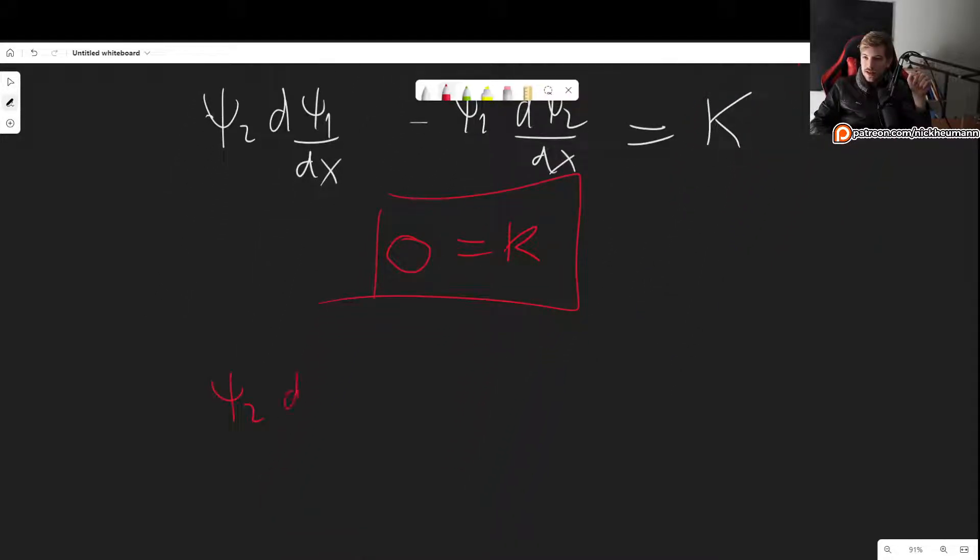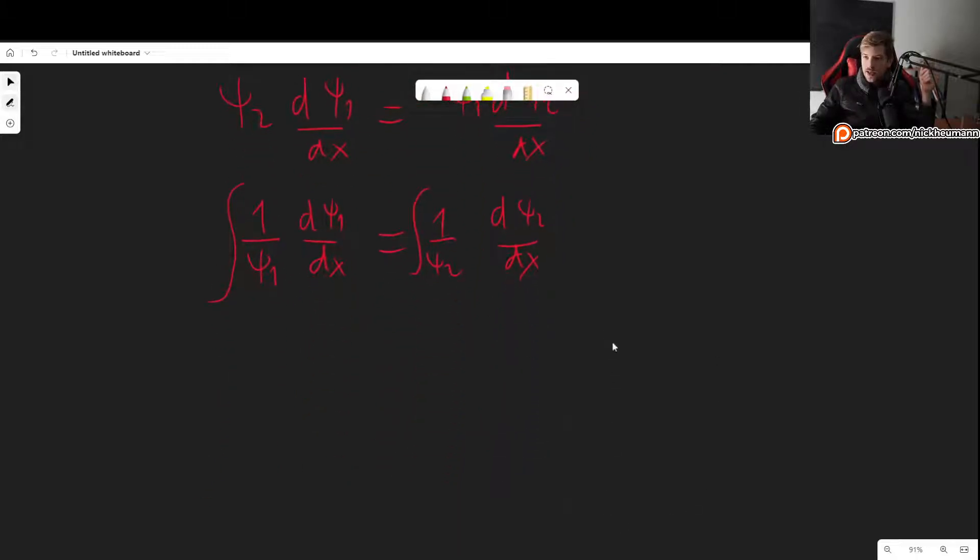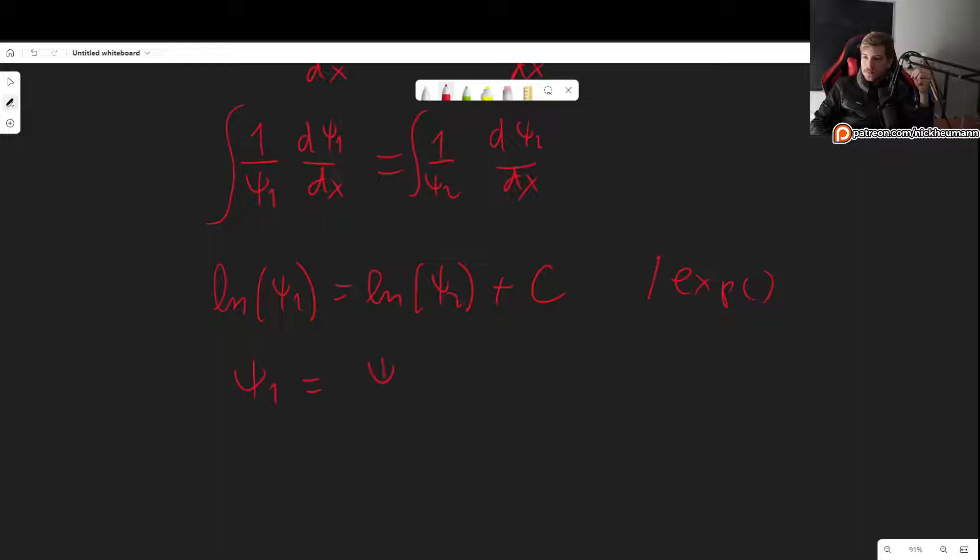So that lets us see that ψ₂ dψ₁/dx is equal to ψ₁ dψ₂/dx. And this is a differential equation that we can easily solve by separating the variables. So everything with ψ₁ to the left. So we get 1/ψ₁ dψ₁/dx = 1/ψ₂ dψ₂/dx. And now we integrate both sides. And we get the natural log of ψ₁ is equal to the natural log of ψ₂ plus some constant. And now we can exponentiate all of this. And we get ψ₁ is equal to ψ₂ times e to the power of some constant, which is still just some constant.